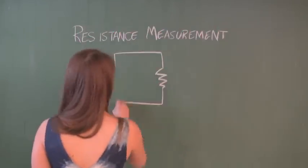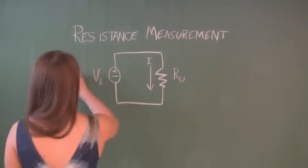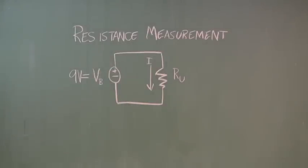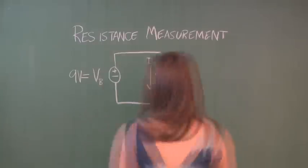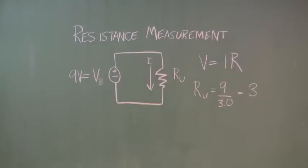First, we can try measuring the current through a resistor connected to a battery. If we know the voltage of the battery, say 9 volts, we can measure the current through the resistor and calculate the resistance with Ohm's law. If we measure 3.0 amps, we know we have a 3 ohm resistor.